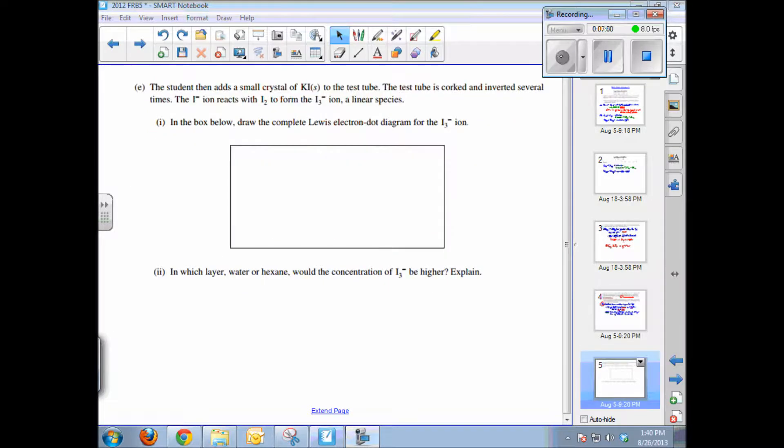And the final subpart to the question asks: A student adds a small crystal of potassium iodide to a test tube. It's corked. The iodine ion reacts to form the I3 minus ion, a linear species. They're giving you a hint there about the structure. In the box below, draw the complete Lewis diagram for this ion, I3 minus.